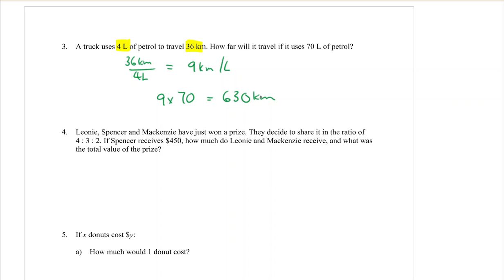Question 4. Leonie, Spencer, and Mackenzie have just won a prize. They decide to share it in the ratio of 4 to 3 to 2. I'm going to write that down here, 4:3:2. We know we've got three numbers in a ratio, it's a little bit different. We've got Leonie is going to be the first one, Spencer is the second number, and Mackenzie is the 2 on the end. If Spencer receives $450, so Spencer here in the middle is getting $450, how much is Leonie and Mackenzie, the ones on the sides, how much are they going to get? I'm going to start with Leonie. Because I'm trying to find Leonie, her number in the ratio which is 4 is going to go on the top, and I'm going to put it over Spencer which is 3, and times it by the 450. So that equals $600.